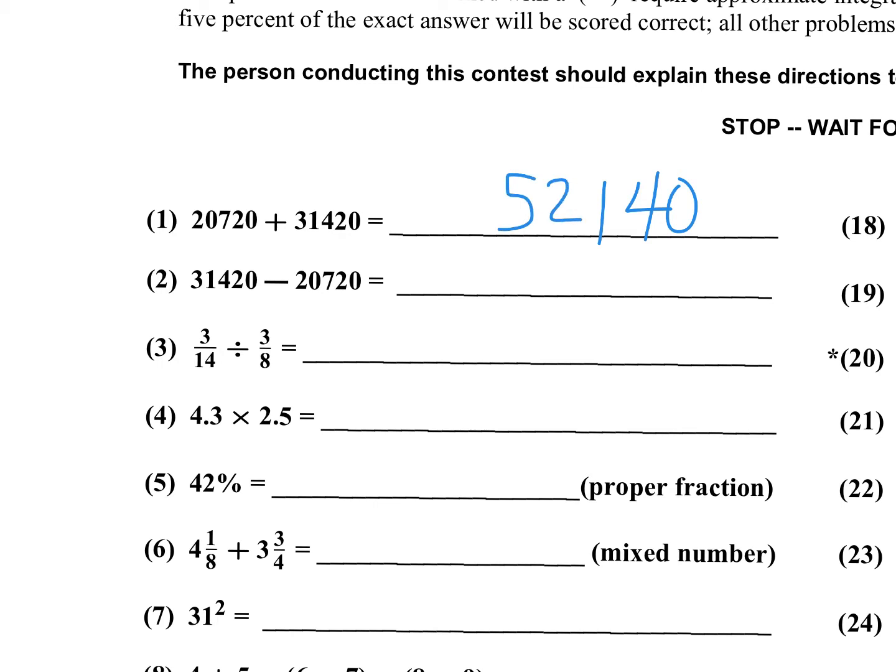For problem 2, I'm gonna look at the last two digits 20 minus 20 that's 00 and then I'm gonna have 4 minus 7, that's gonna be 14 minus 7 that's gonna be 7. And then I'm gonna have 30 minus 20 since I borrowed one, 30 minus 20 is 10. So I have 10,700.